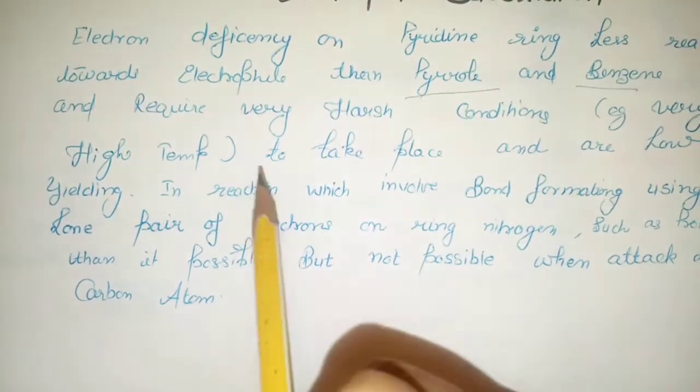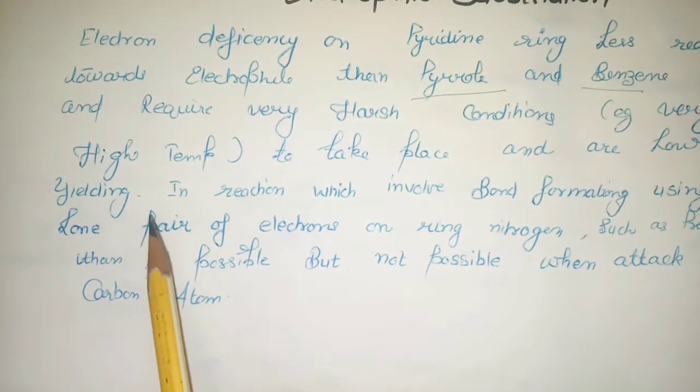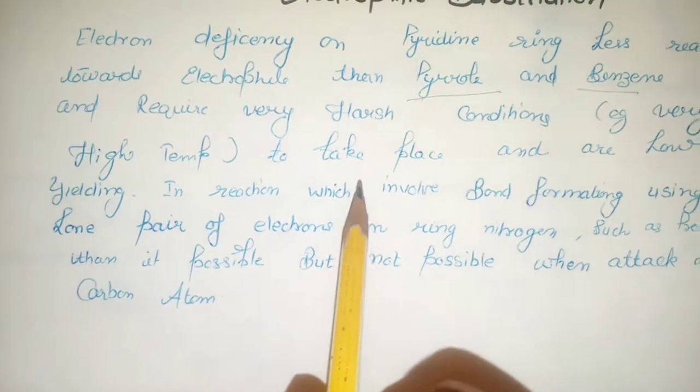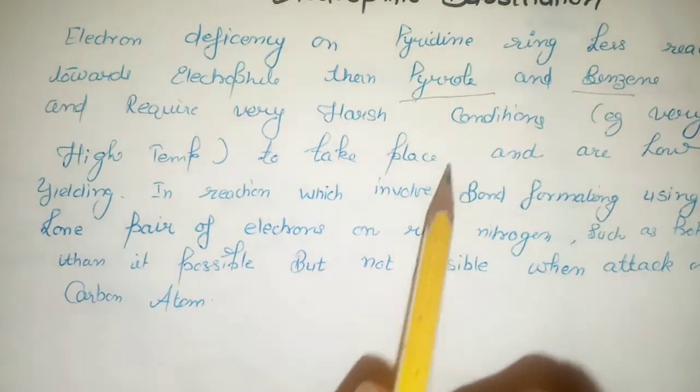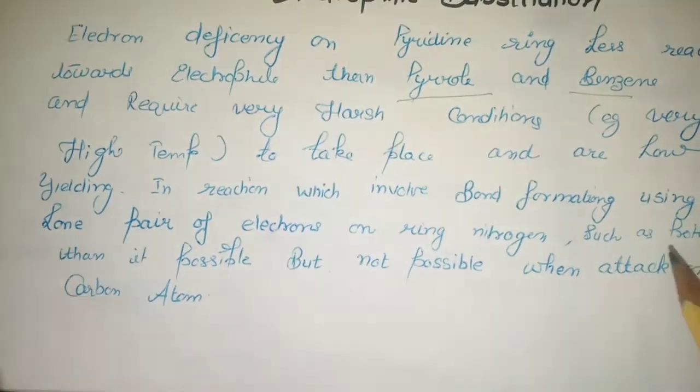Why can't electrophilic substitution happen? It has electron deficiency. So it's less active as compared to pyrrole and benzene. Under harsh conditions we can get a little result, but we can't get a satisfactory result.